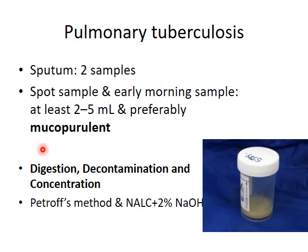The sample should be at least 2-2.5 ml in quantity and should preferably be mucopurulent. Before microscopy, this sample requires prior treatment: digestion to liquefy thick pus cells, decontamination to inhibit normal flora, and concentration to increase the yield of bacilli. Methods available are Petrov's method and N-acetyl L-cysteine with 2% sodium hydroxide.